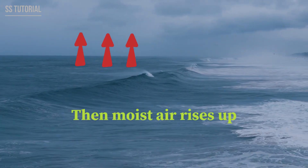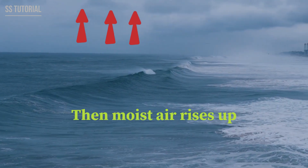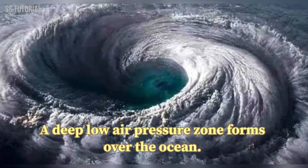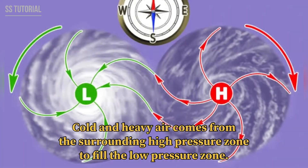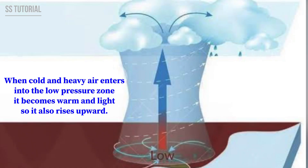Tropical cyclones form over the ocean of the tropical region. When ocean water and the air above the ocean is heated by the sun, this moist air rises up and creates a deep low air pressure zone below. Cold and heavy air comes from the surrounding high pressure zone to fill this low pressure zone. When this cold air enters the low pressure zone, it becomes warm and rises up, and this process continuously goes on.